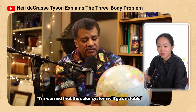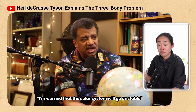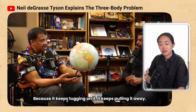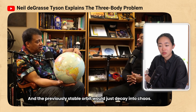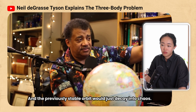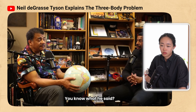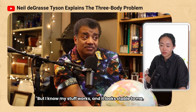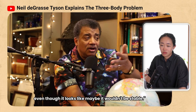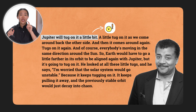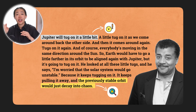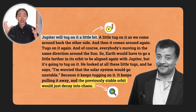Neil says Newton looked at all these little tugs and was worried that the solar system would go unstable — because it keeps tugging, the previously stable orbit would just decay into chaos. But Newton said: "I know my stuff works, and it looks stable to me — so clearly it is stable, even though it looks like maybe it wouldn't be." So we have our surprise and the complication: if that tugging keeps happening, there will be chaos. And our problem-solving brain is primed: so what is it? What's the answer?